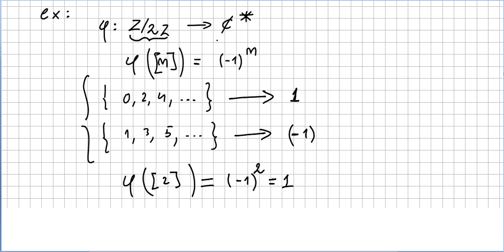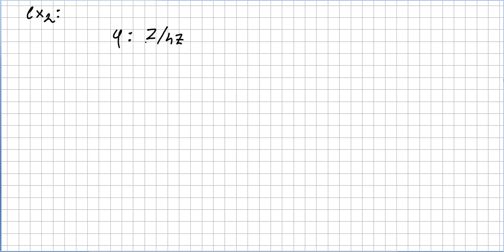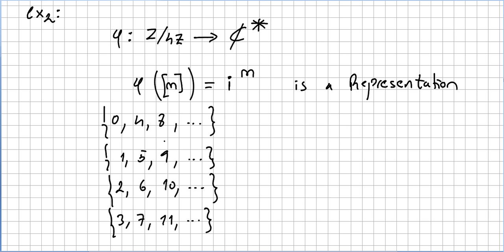Another example will be a homomorphism sending the group, the factor group Z by 4Z, to the complex nonzero numbers. It will be sent this way: m here, where this is a matrix, and that will be, let's say, i the complex number to the power of m. This one is also a representation.